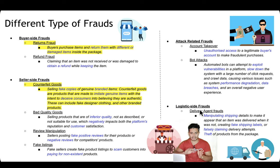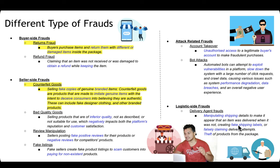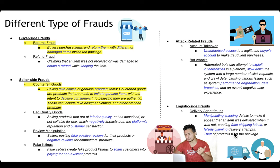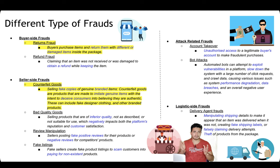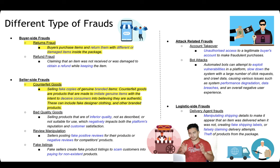There can also be logistic-side frauds. Delivery agent fraud involves manipulating shipping details to make it appear an item was delivered when it was not, creating fake shipping labels, or falsely claiming a delivery was attempted. There can also be theft of products from packages — for example, removing one item from a multi-item package. So the fraud types are: buyer-side, seller-side, attack-related, and logistic-side.